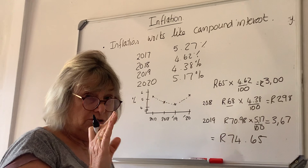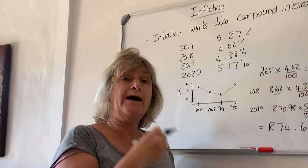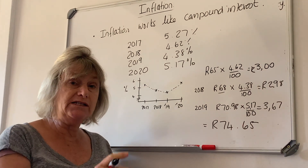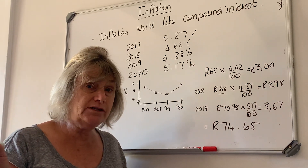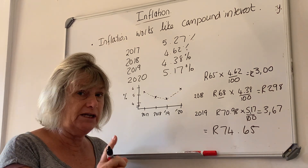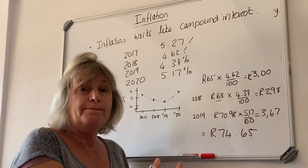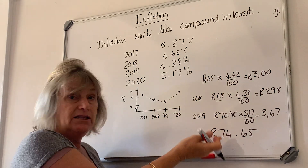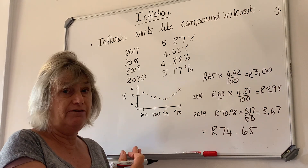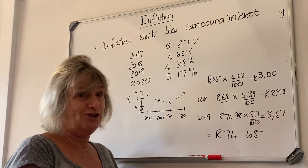A word of caution: this assumes coffee goes up at the same rate as the general inflation rate. Remember, the inflation rate is calculated as an average across 2,500 items in a basket of goods and services — not on each individual item. So individual items could have quite different inflation rates. I hope that helped — thank you very much.